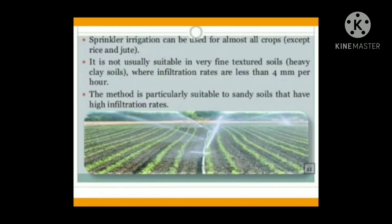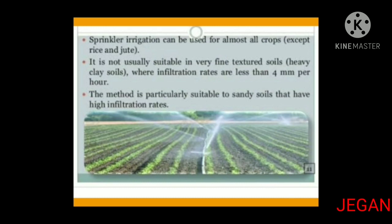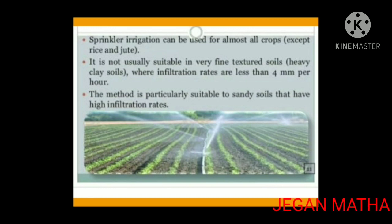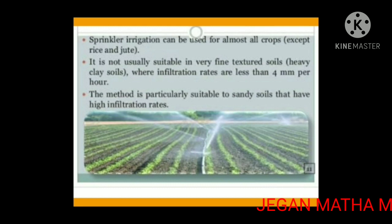Sprinkler irrigation can be used for almost all crops except rice and jute. It is not usually suitable in very fine textured soil, meaning heavy clay soil, where infiltration rates are less than 4 millimetres per hour. The method is particularly suitable for sandy soils that have high infiltration rates.